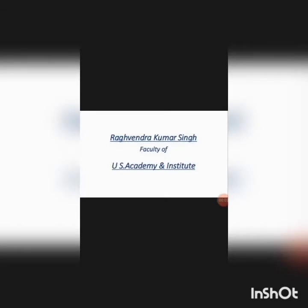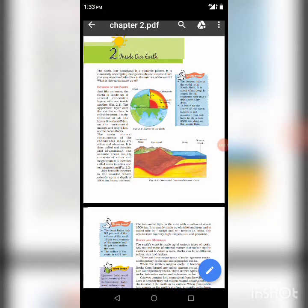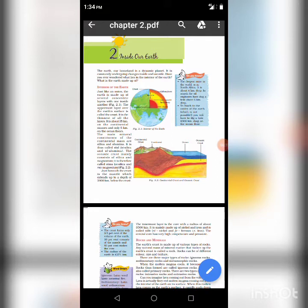Hello Students, I am Raghavan Kumar Singh, Faculty of U.S. Academy and Institute. Today, we will discuss Class VII Geography's second chapter, Inside our Earth. In this chapter, we will discuss about the planet Earth, the interior parts of the planet named crust, mantle, and core; rocks and their types such as igneous rocks, sedimentary rocks, and metamorphic rocks; uses of rocks, rock cycles, and minerals.